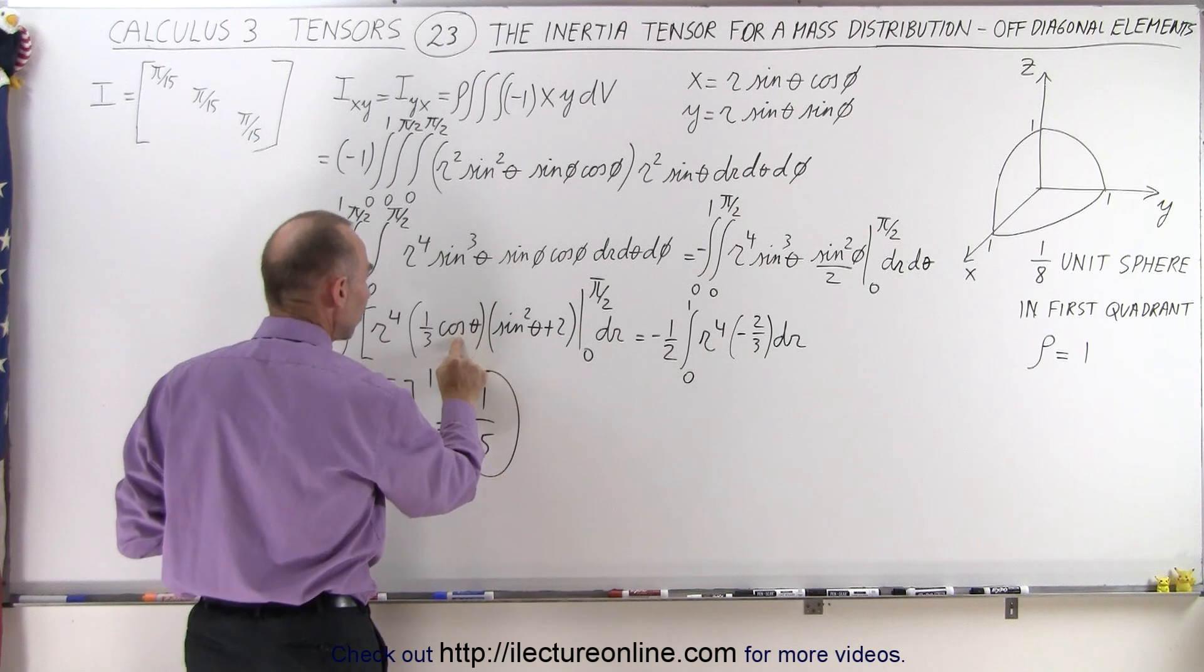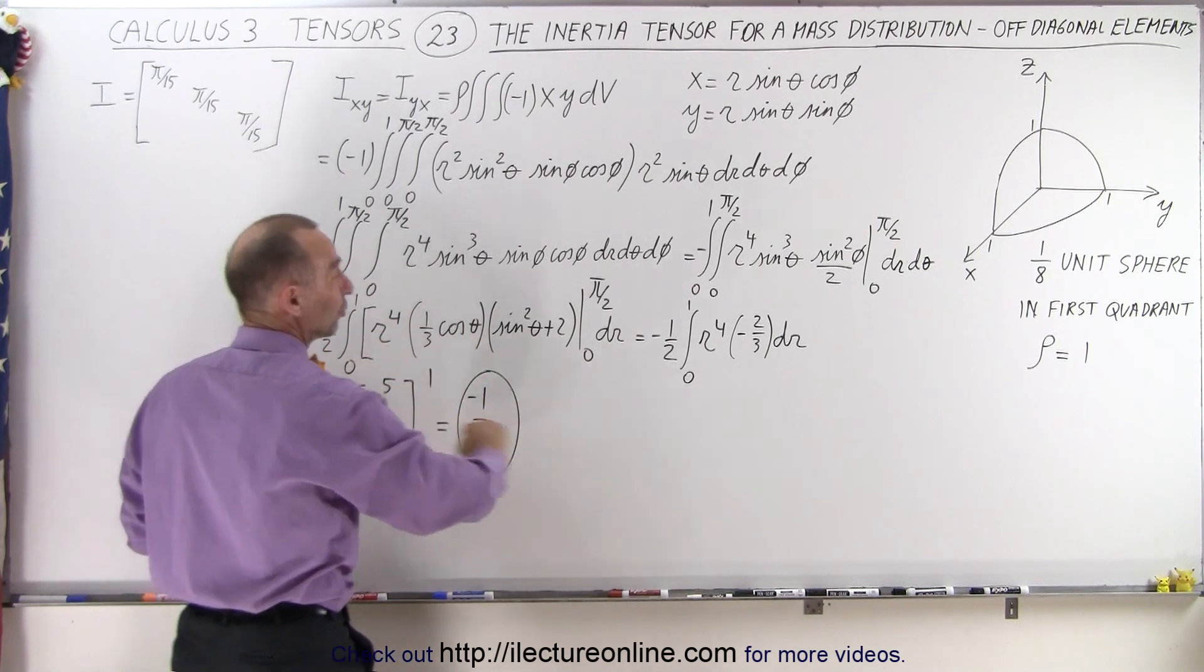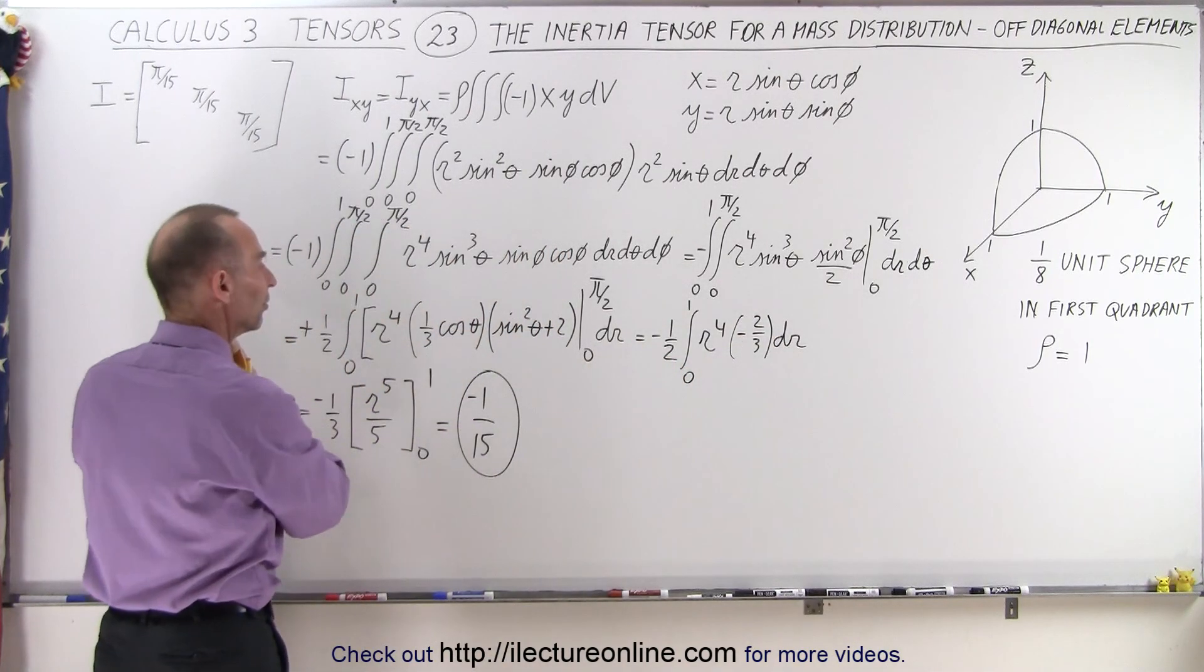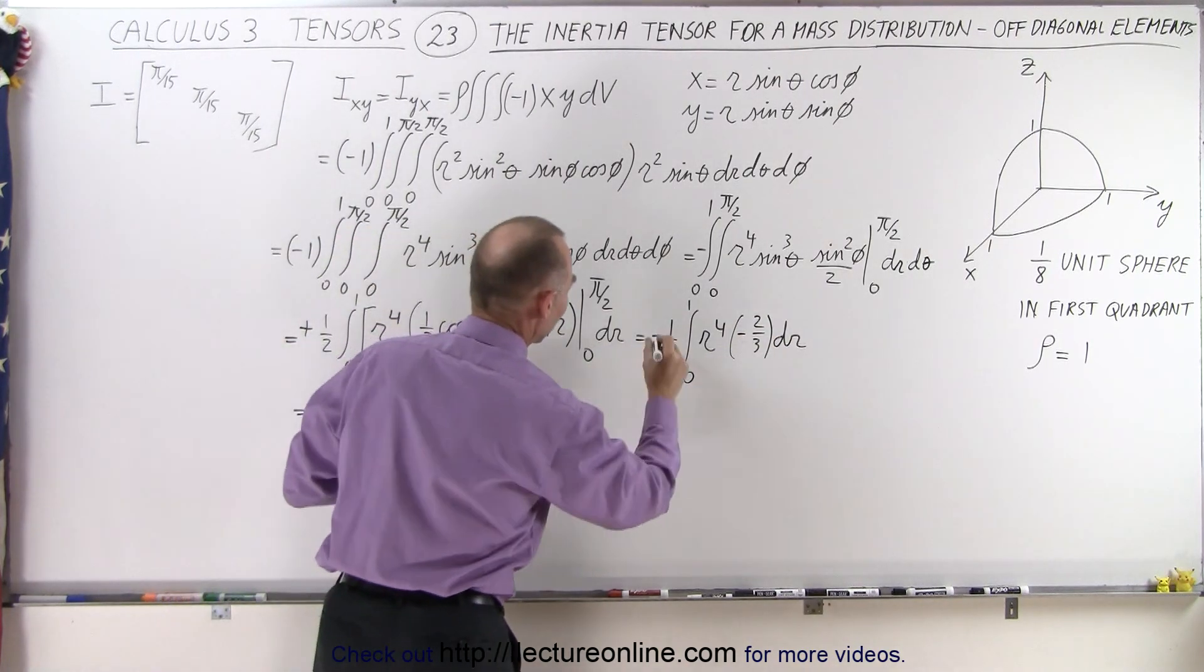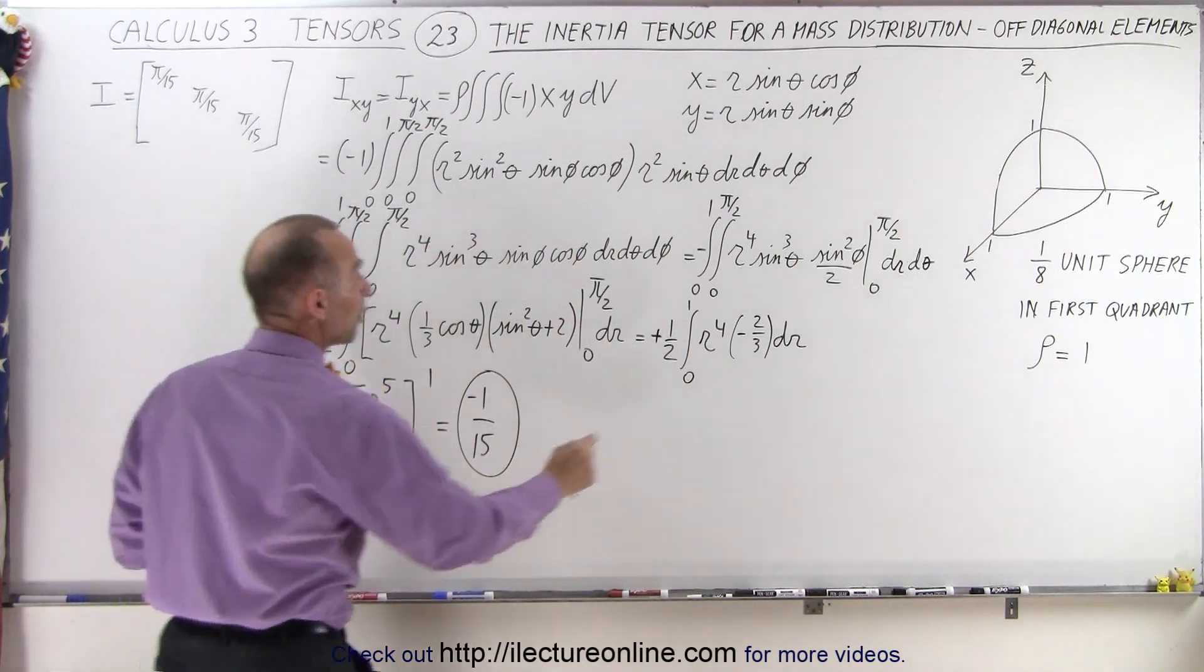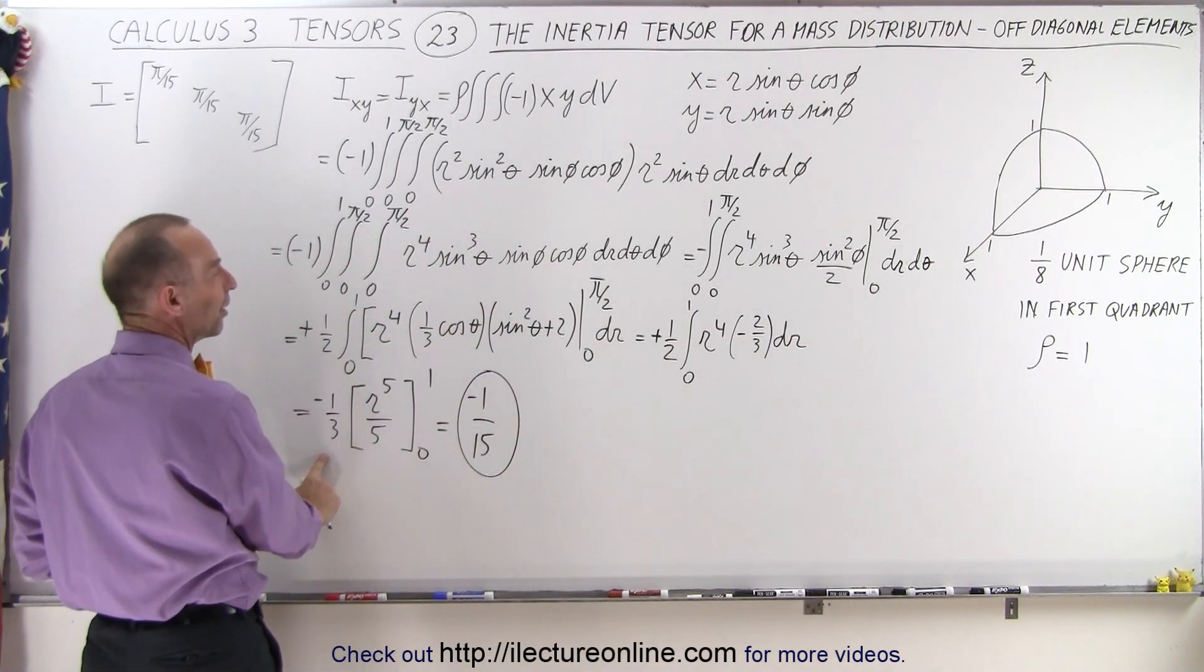So we have a 2 times a minus 1, because we're subtracting, because we're plugging the lower limit times 1/3, that's minus 2/3, is the result of that. We have a minus 1/2 in the front. Well, actually, that became a plus 1/2, so let's make that a plus now. But when we multiply the 2/3 times 1/2, that gives us a minus 1/3 again in the front.